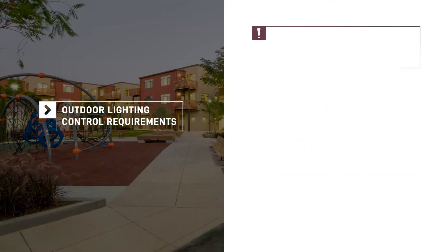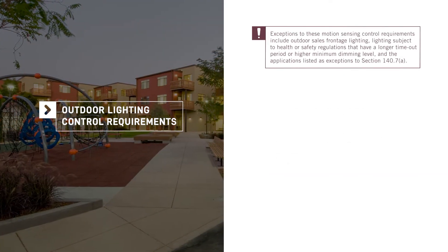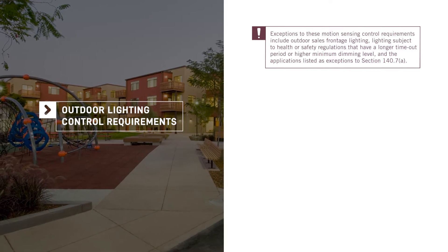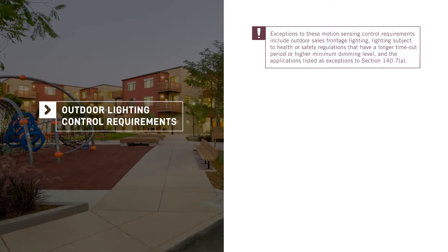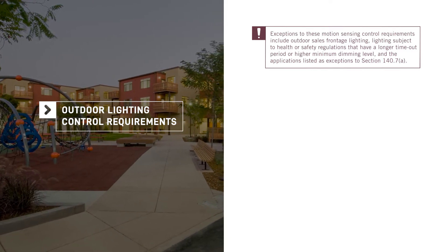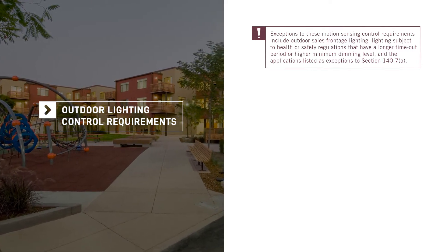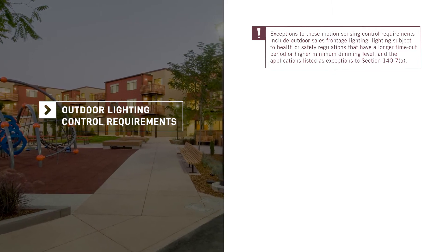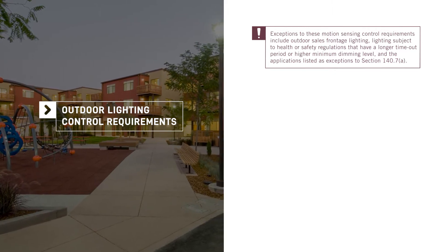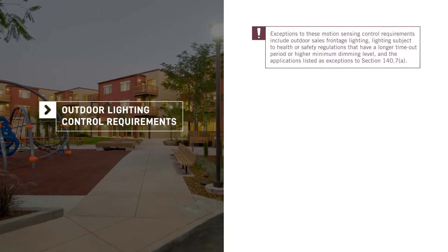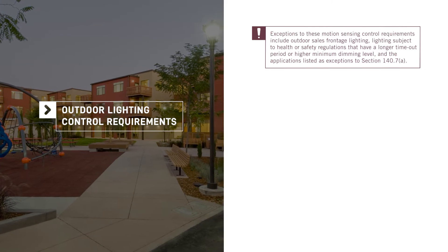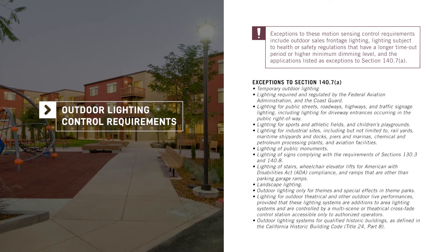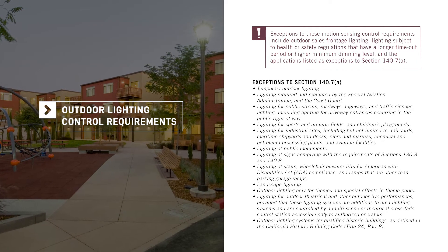Exceptions to these motion sensing control requirements include outdoor sales frontage lighting, lighting subject to health or safety regulations that have a longer timeout period or higher minimum dimming level, as well as the applications listed as exceptions to Section 140.7a.